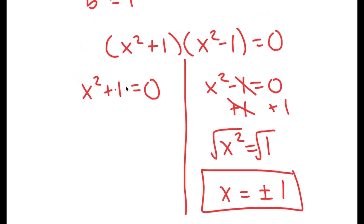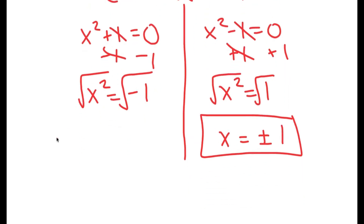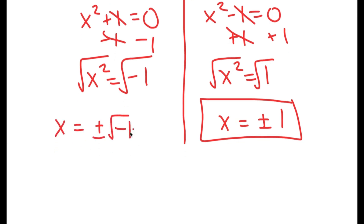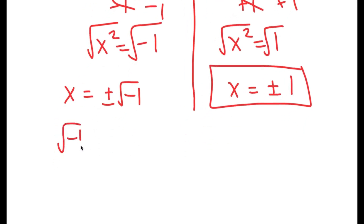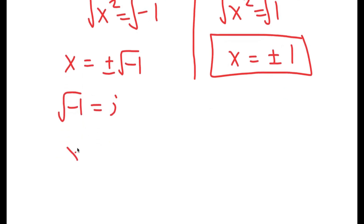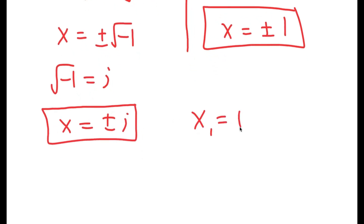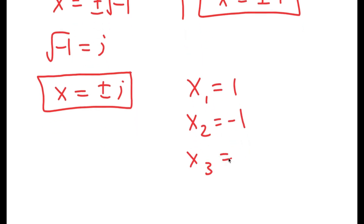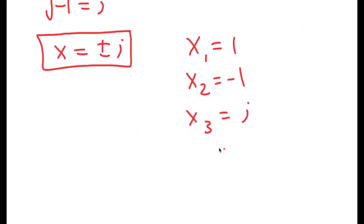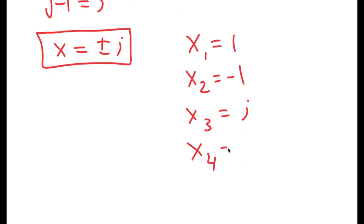Now for x squared plus 1 equals 0, I'm going to subtract 1 on both sides, so I get x squared is equal to negative 1. Taking the square root on both sides, I get x is equal to positive or negative the square root of negative 1. The square root of negative 1 is equal to i, so x equals positive or negative i. So my four solutions are x equals 1, x equals negative 1, x equals positive i, and x equals negative i.